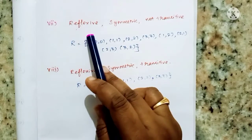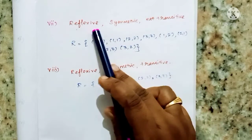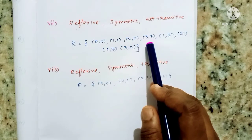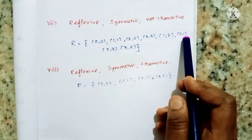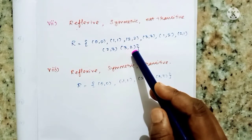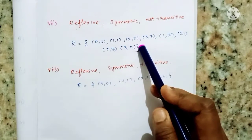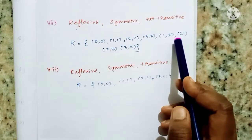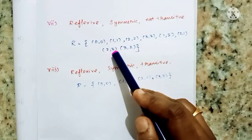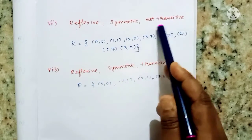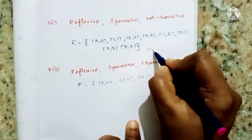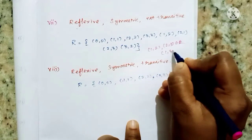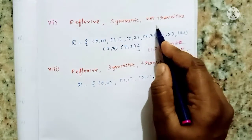Next is the seventh subdivision: reflexive but non-symmetric, and not transitive. Reflexive means all elements (0,0), (1,1), (2,2), (3,3) are present. Then symmetric pairs (1,2),(2,1) and (2,3),(3,2) are added — so it is reflexive and symmetric. But it is not transitive: if (0,1) and (1,2) belong to R, then (0,2) must also belong to R. Since (1,3) is not present when (1,2) and (2,3) are in R, it is not transitive.